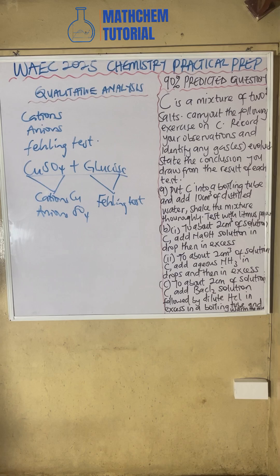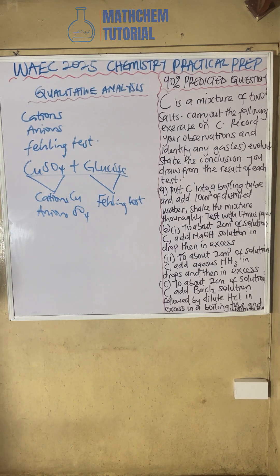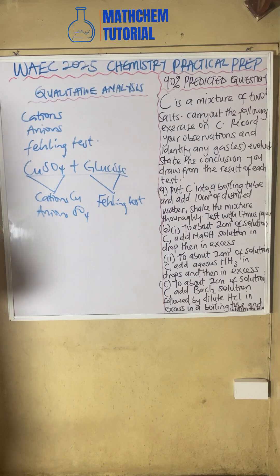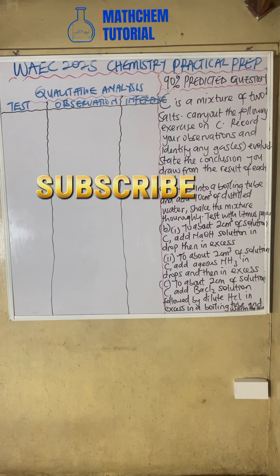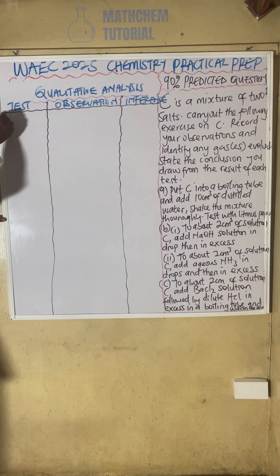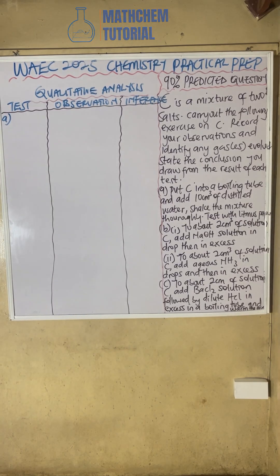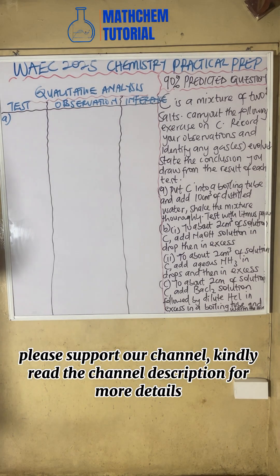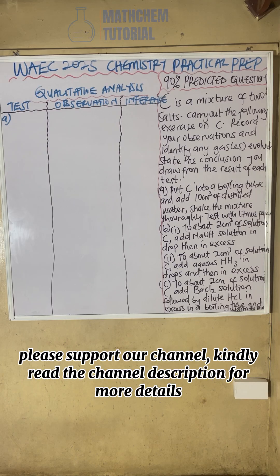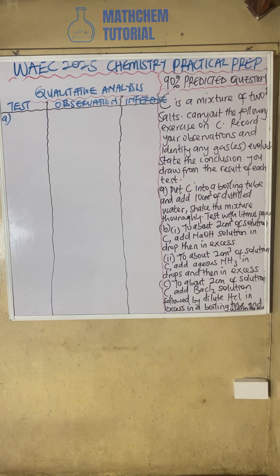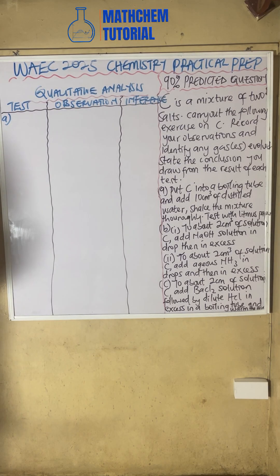Now let's look at the 90% predicted questions for WAEC 2025 chemistry practical qualitative analysis. Don't forget to share this video, give us a like, and leave a comment. Starting from part A: sample C — as I said, it combines CuSO₄ together with glucose. From the CuSO₄ we are testing for cations and anions, and from the glucose we are testing for reducing sugar using the Fehling's test.